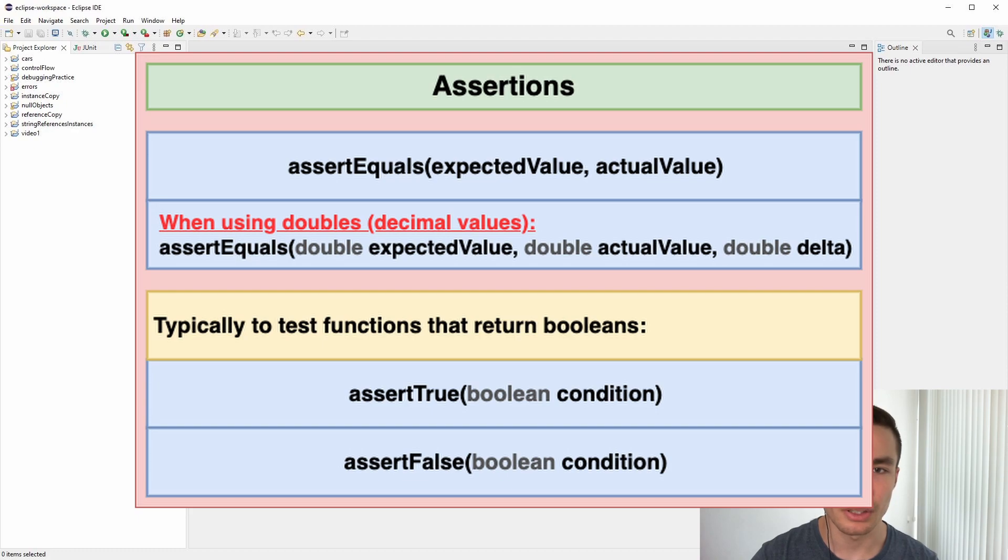Now we will look at the assertion functions available to us in JUnit. To test a function using JUnit, we first call the function with a specific set of input values. We then take the result that the function returns and pass it as an argument to an assertion function.